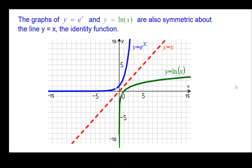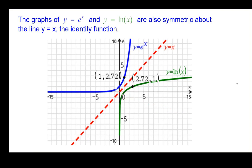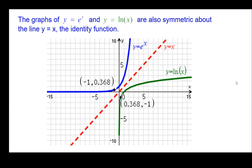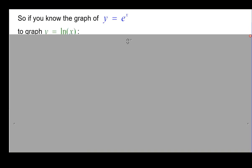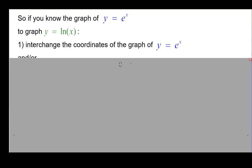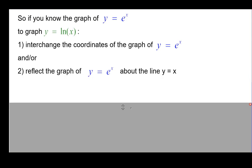Mirror image idea going on here. Showing some ordered pairs: on the blue graph it's (0, 1); on the green it's (1, 0) — those are definitely interchanged coordinates. And these two other points also have coordinates interchanged. These are our big four that we will use to sketch out the curve. So if you know the graph of y equals e to the x, to graph the natural log you can either interchange the coordinates, or reflect the graph y equals e to the x about the line y equals x — you have your choice.